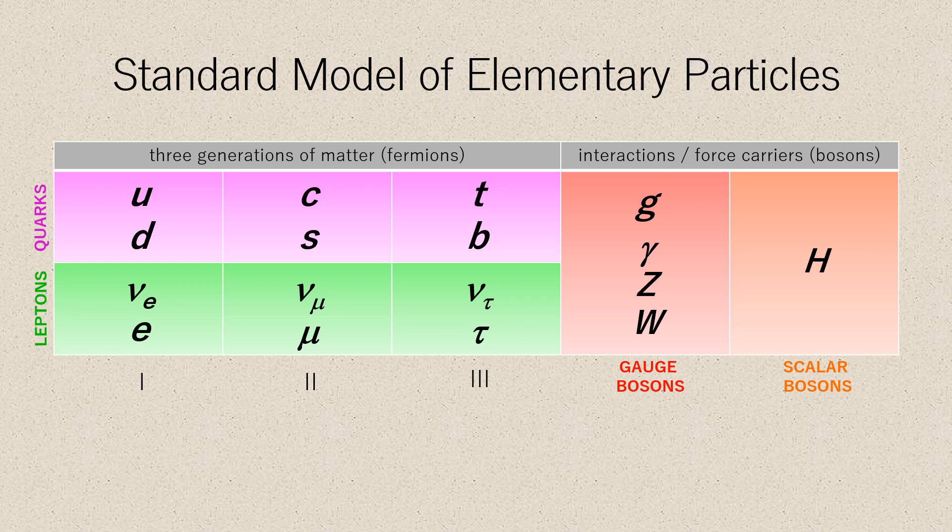Each member of a generation has greater mass than the corresponding particles of lower generations. The first generation charged particles do not decay, hence all ordinary baryonic matter is made of such particles. Specifically, all atoms consist of electrons orbiting around atomic nuclei, ultimately constituted of up and down quarks.